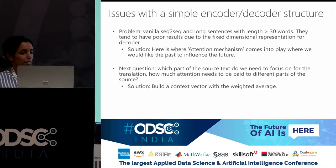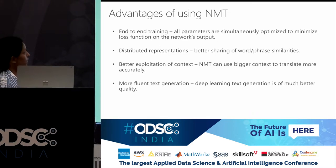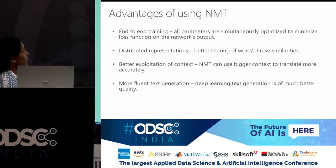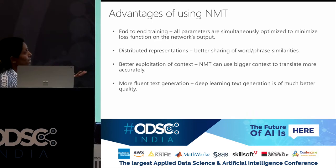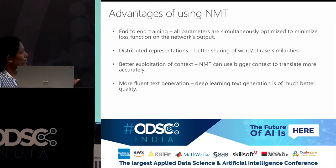To wrap up the NMT piece: why is neural machine translation much more popular than statistical or rule-based machine translation? It's simply much simpler — it's end-to-end training, all the parameters are simultaneously optimized to minimize the loss of the entire network in one step. You don't have to maintain multiple little models. There are distributed representations with sharing of word and phrase similarities, better exploitation of context, and it ends up generating more fluent text. It's shown quite good results of late, so we tend to use it most of the time now.